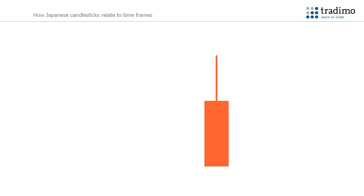Every candlestick has a certain period in which they form. This means that, for example, a 5-minute candlestick shows you the price change during a 5-minute period. When 5 minutes are over, a new candle starts to form.